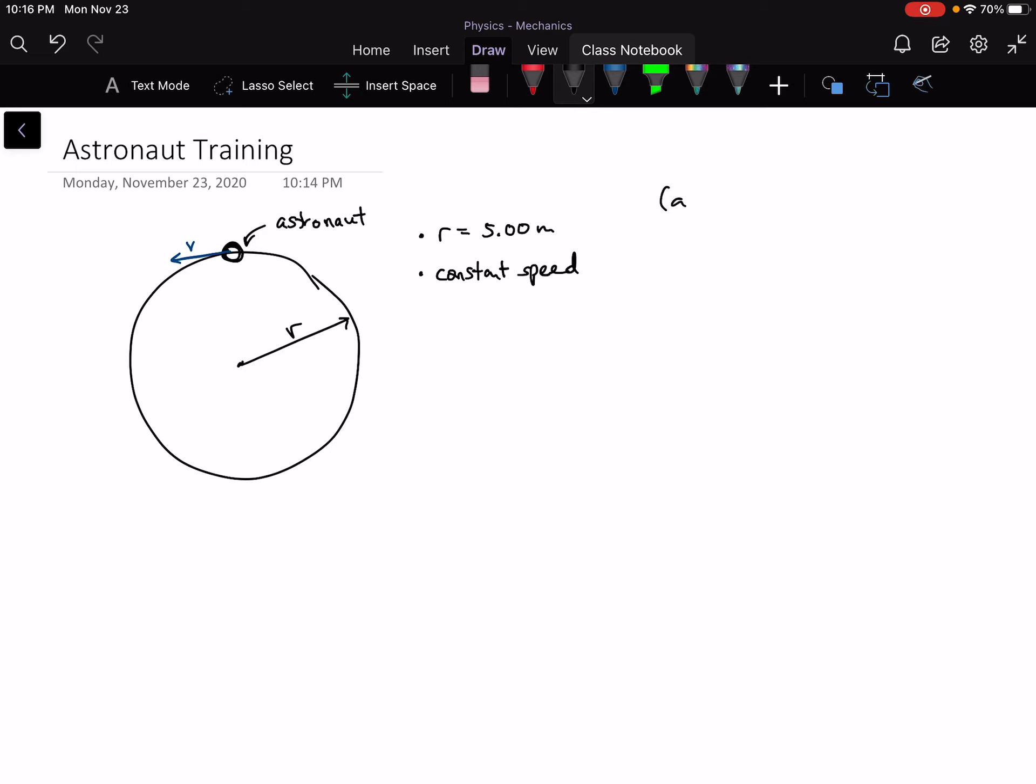All right, so we want to know this. And if we're thinking about that, the tangential velocity is just whatever this constant speed is here. And we have an equation for the acceleration he must experience, which is the centripetal acceleration.